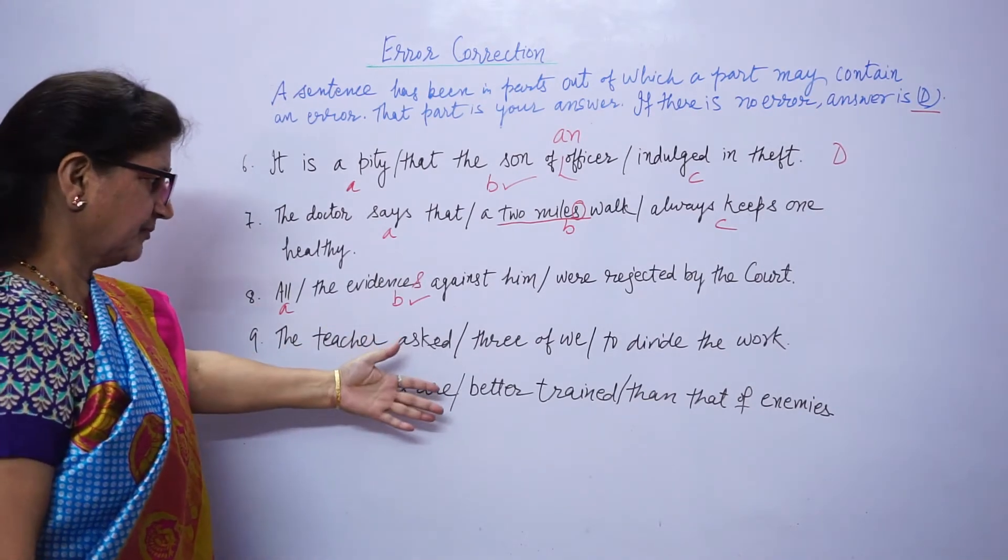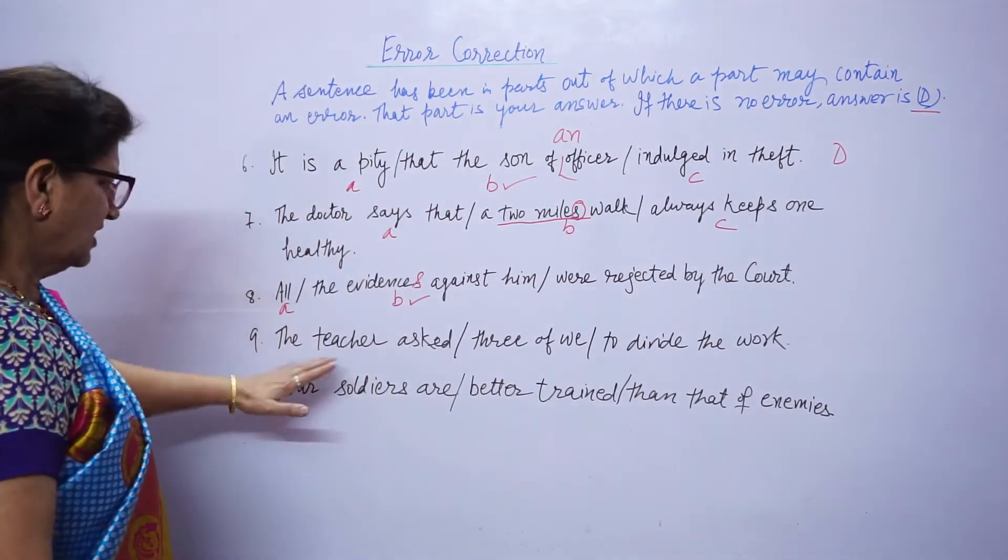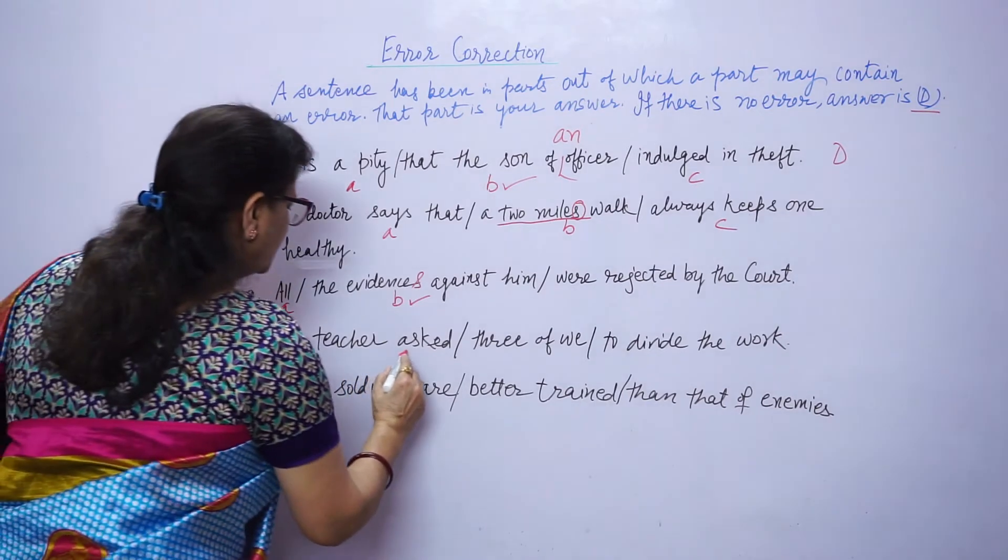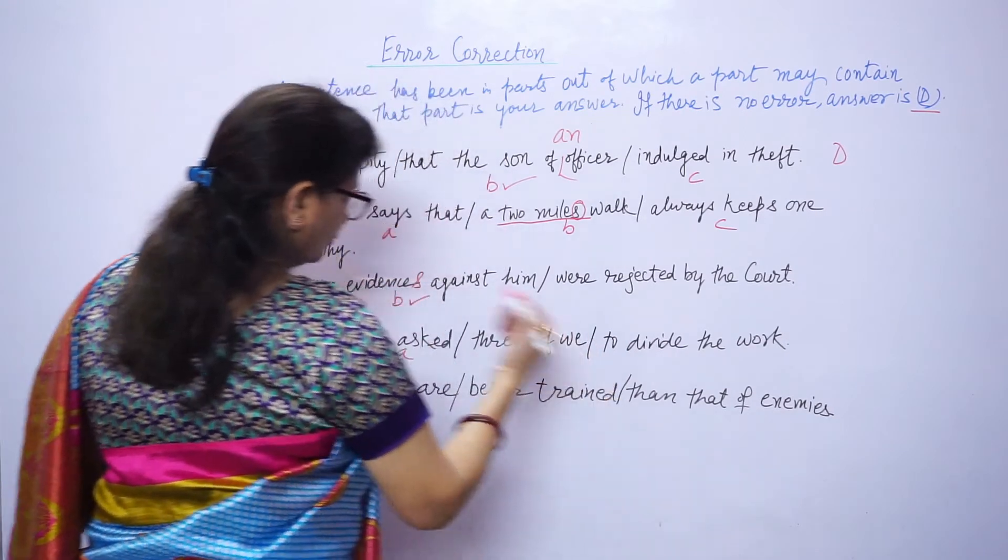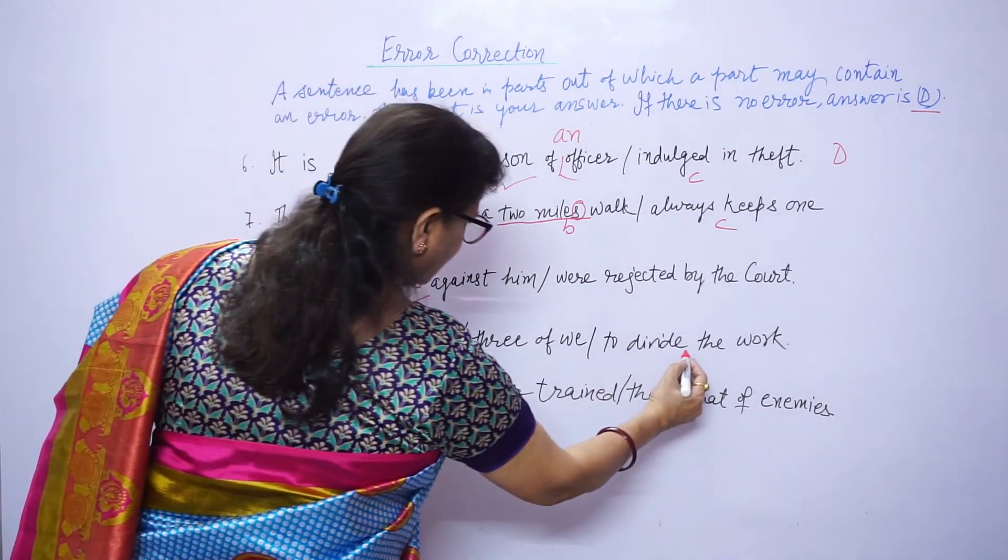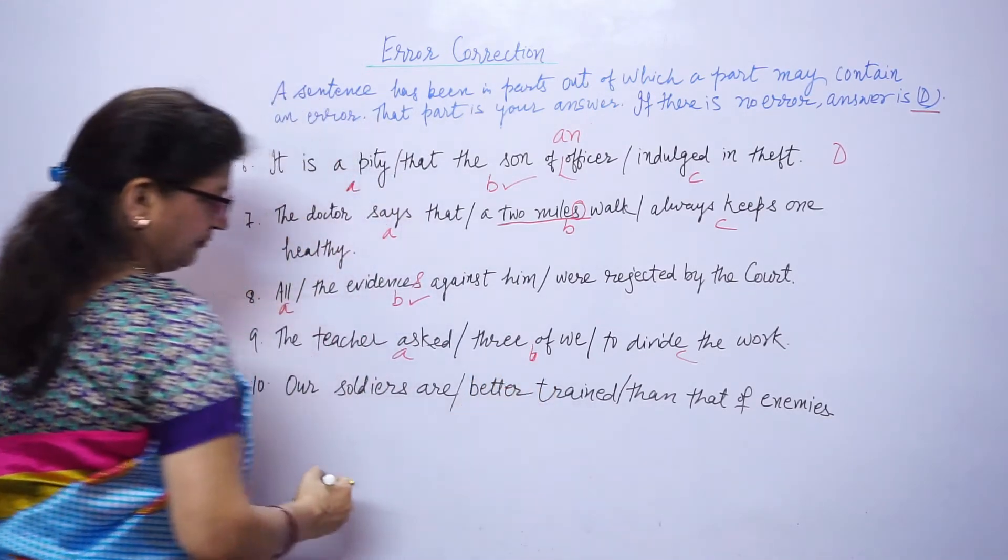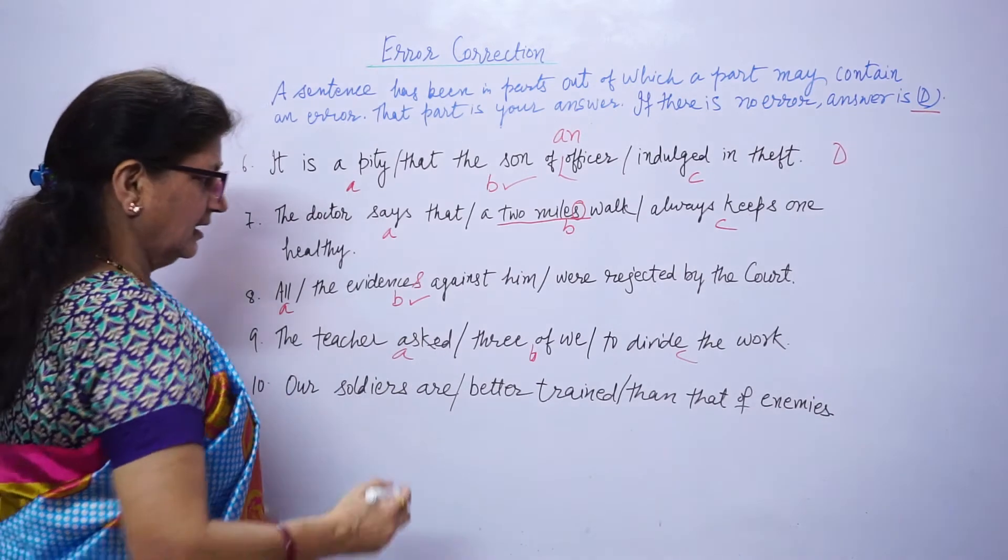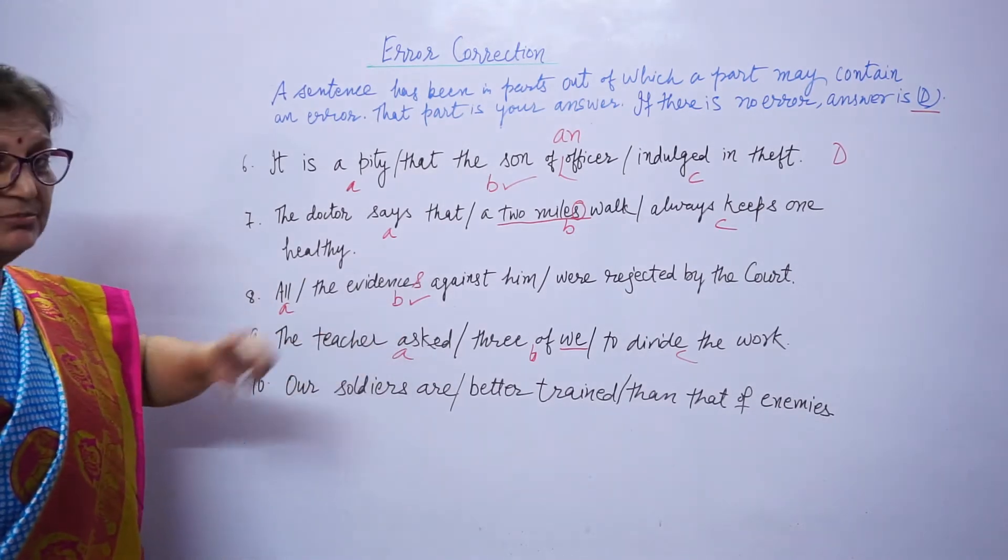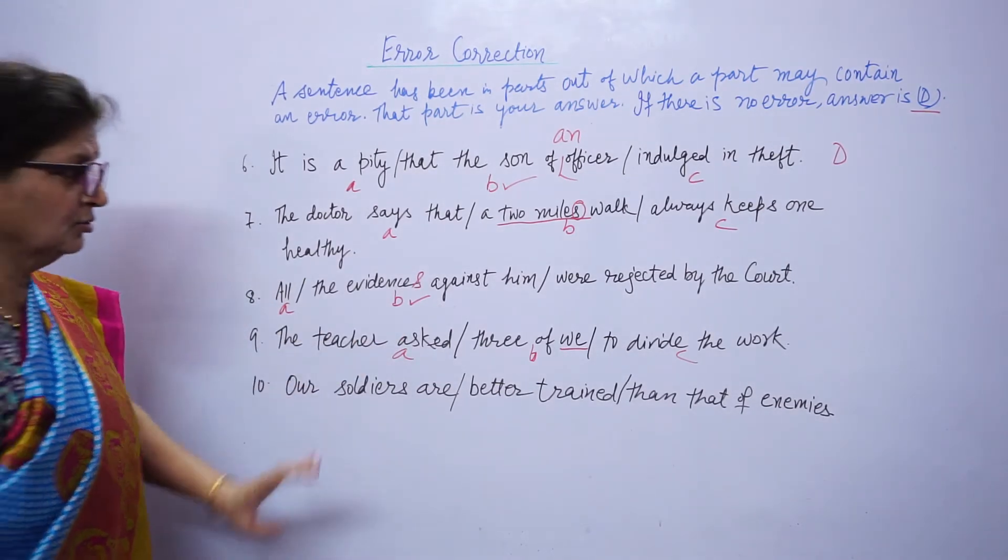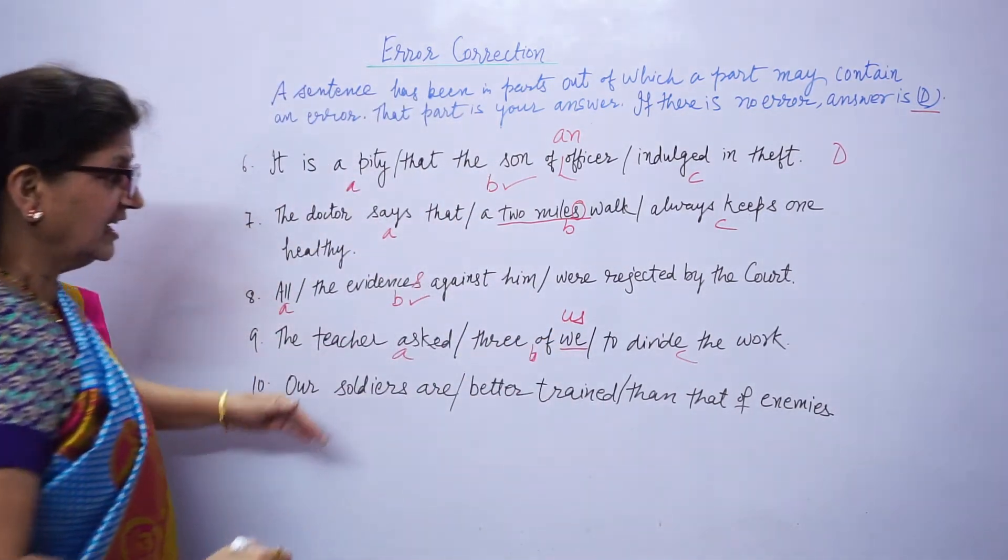The teacher asked three of me to divide the work. A part seems to be correct, three of us, to divide the work. Error seems to be here, three of me. When there is this type of construction in a sentence, it should not be subject form of pronoun, they should be object form of pronoun. Three of us.